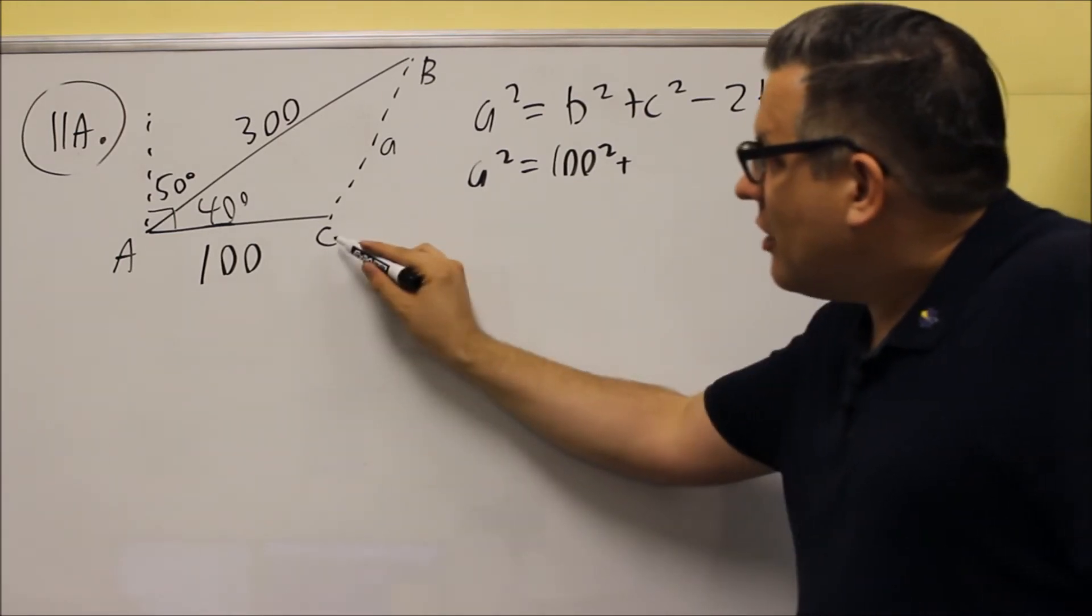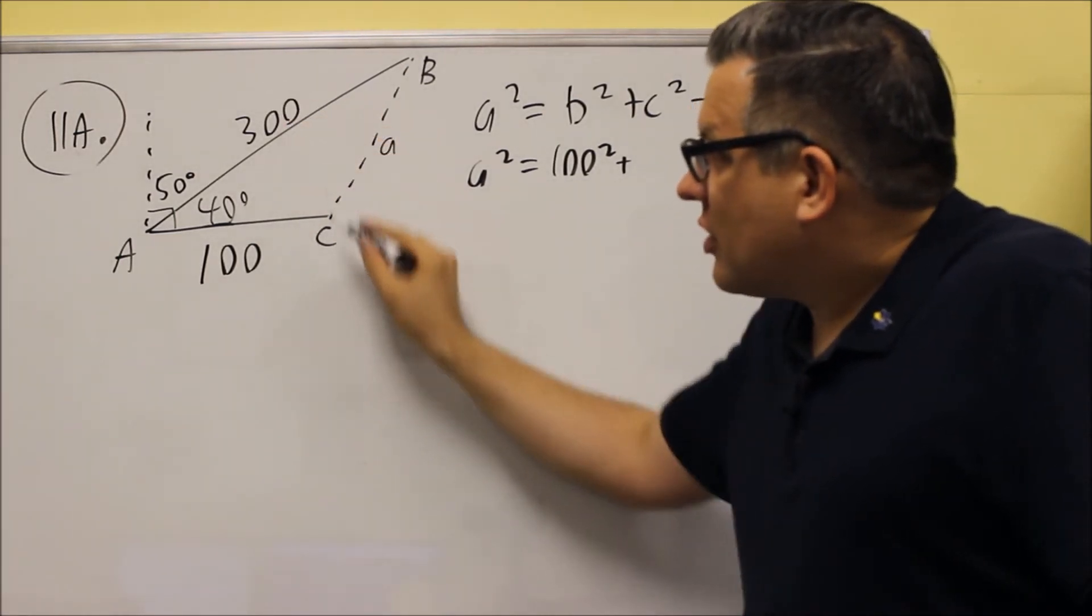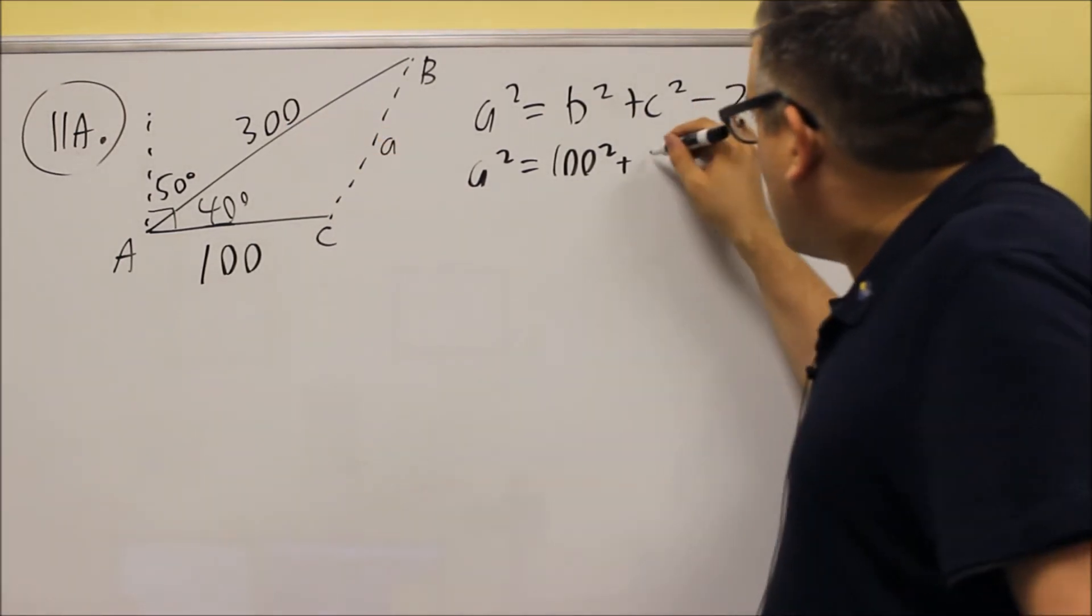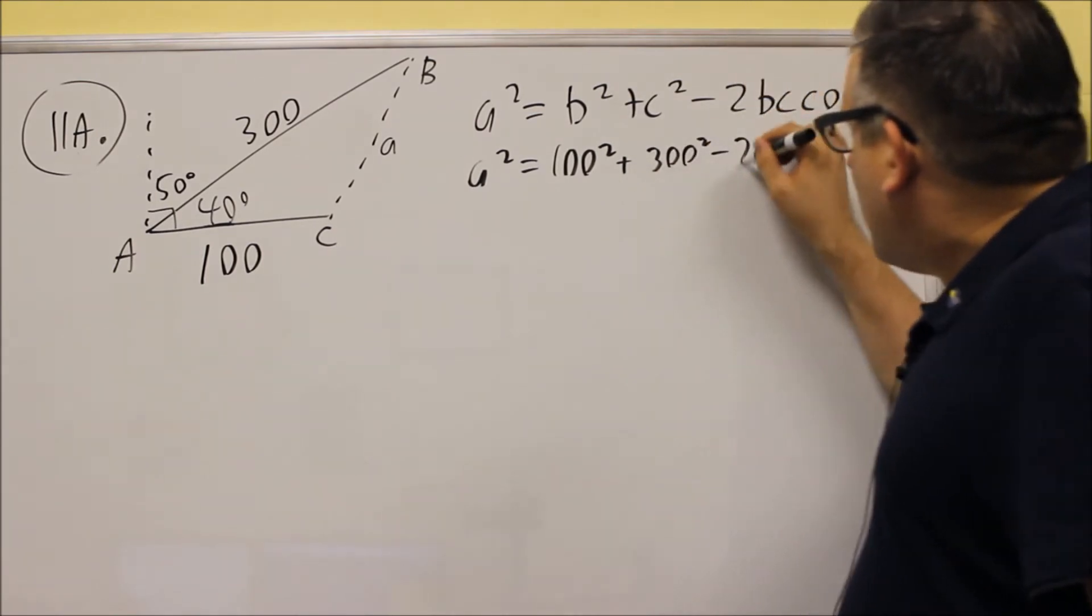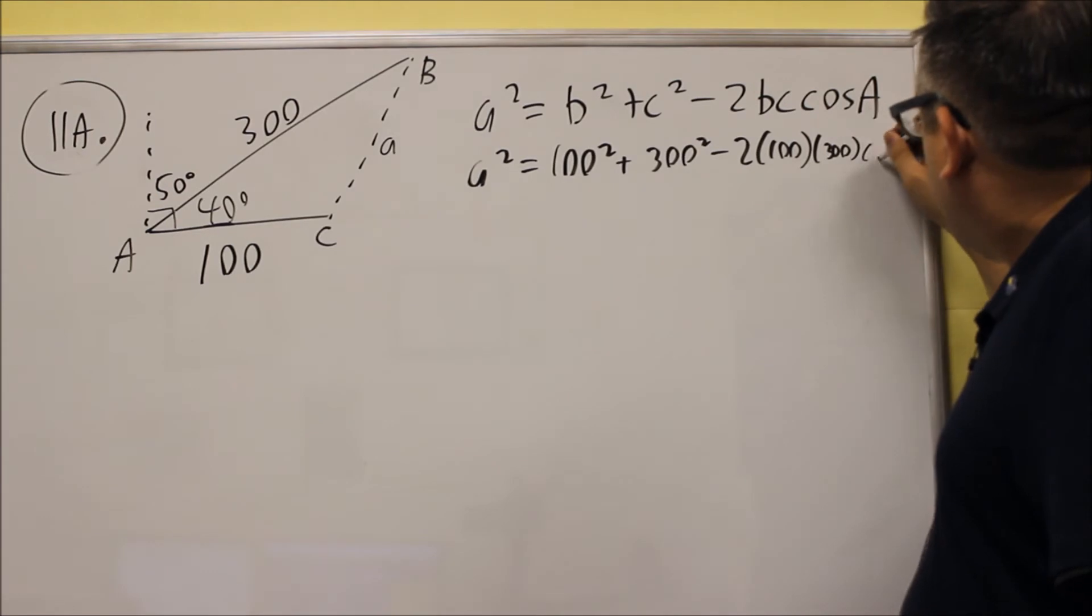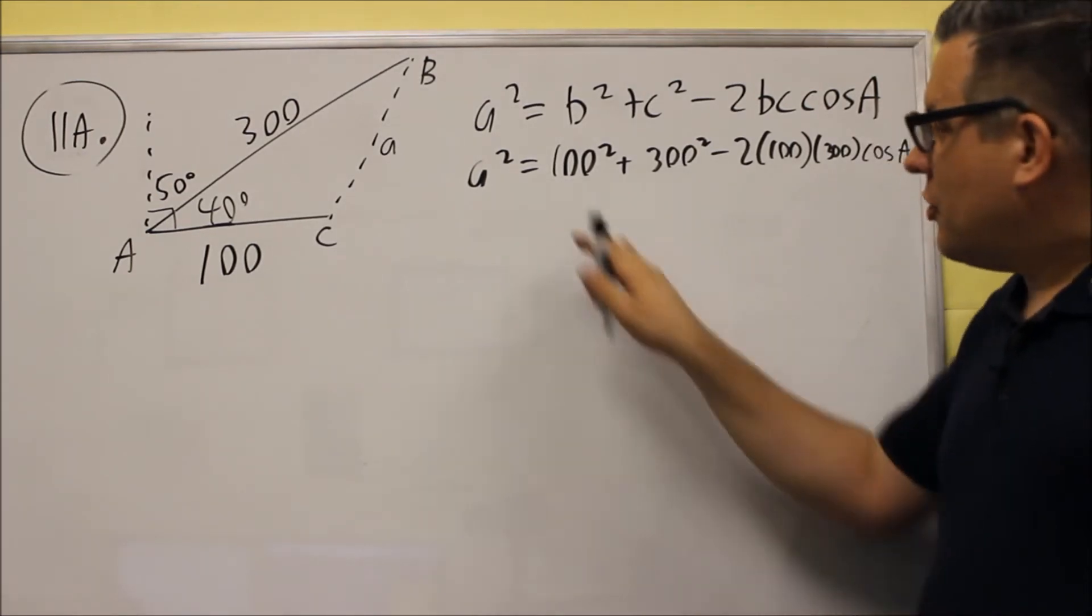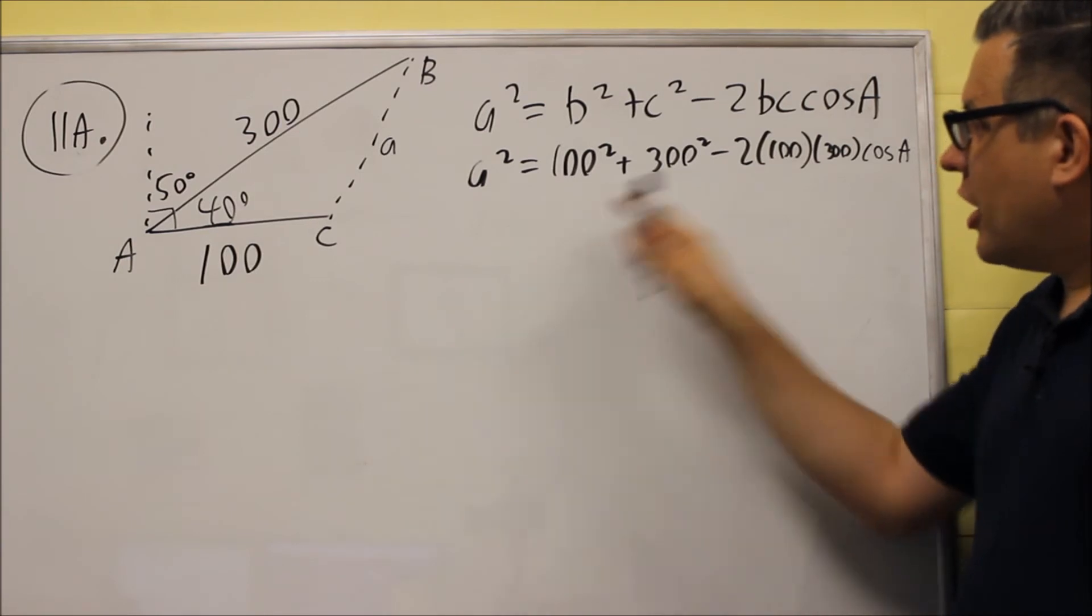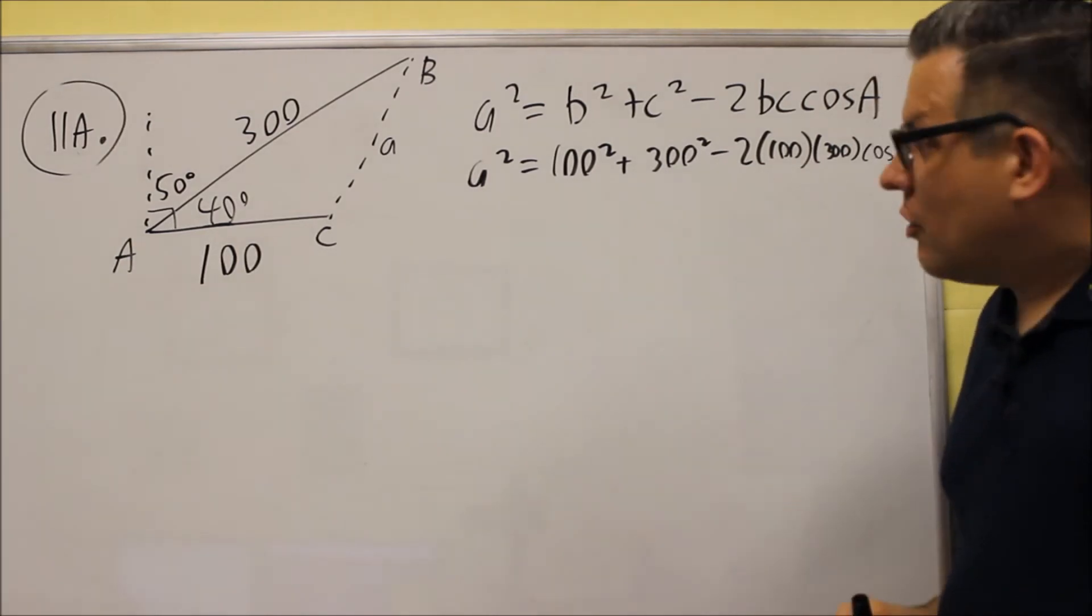Next is C squared. C is going to be 300, since it's opposite the angle C. So 300 squared minus 2 times 100 times 300, and then we have cosine A afterwards. So this is going to be setting it up, plugging in all the numbers from the formula.